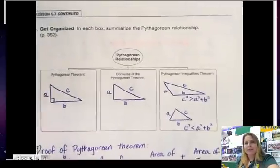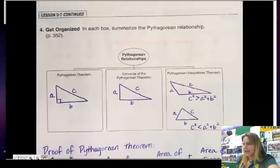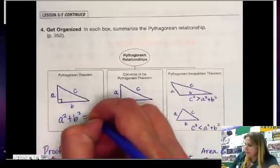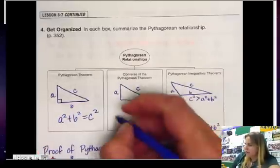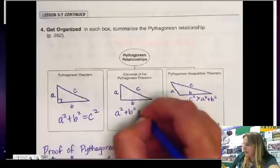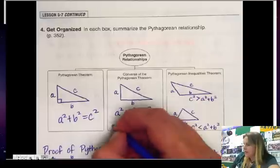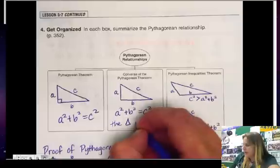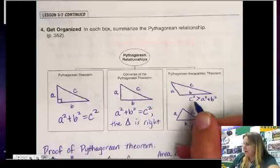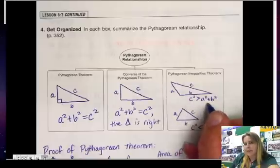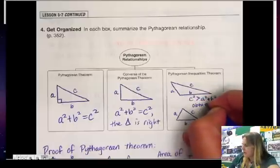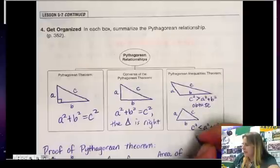To sum up: the Pythagorean Theorem is a squared plus b squared equals c squared. If a squared plus b squared equals c squared, the triangle is right. If c squared is greater than a squared plus b squared, the triangle is obtuse. And if c squared is less than a squared plus b squared, the triangle is acute.